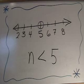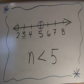Now, since n is less than 5, we shade in all the numbers that are less than 5. If you're not sure where to shade, pick a value on the number line and test it. For example, let's look at 3. Since 3 is less than 5, it should be shaded in.